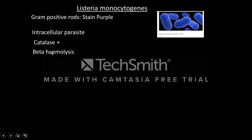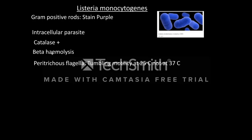The next property of Listeria monocytogenes is that it forms a zone of beta hemolysis in blood agar medium. The following property is that this bacteria has peritrichous flagella.